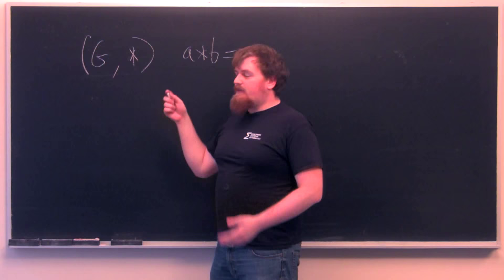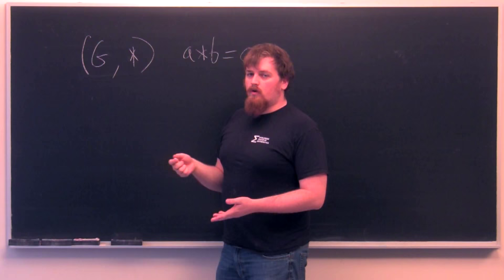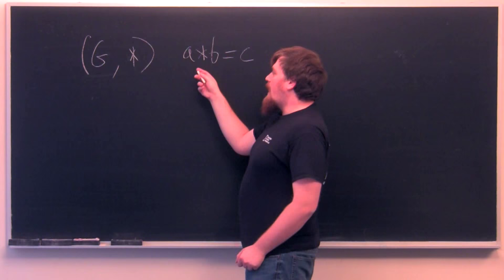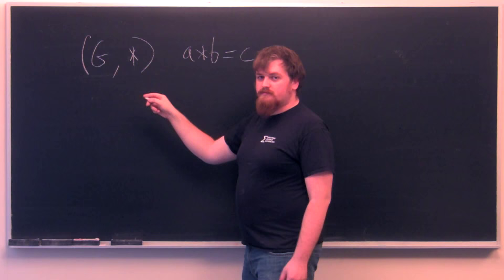And so this pair of set and operation has to satisfy some certain axioms or statements about their properties in order to be considered a group. So the first property is that for any a, b, and c, a star b, or a times b is often what it's called, has to be actually within the group.